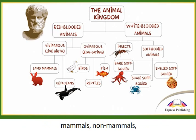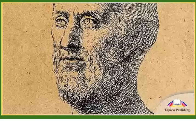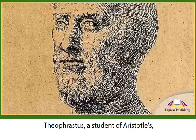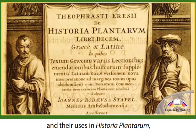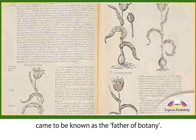These attributes roughly equate to the categories mammals, non-mammals, vertebrates, and invertebrates that we use today. Theophrastus, a student of Aristotle's, went on to name around 500 plants and their uses in Historia Plantarum, and as a result came to be known as the father of botany.